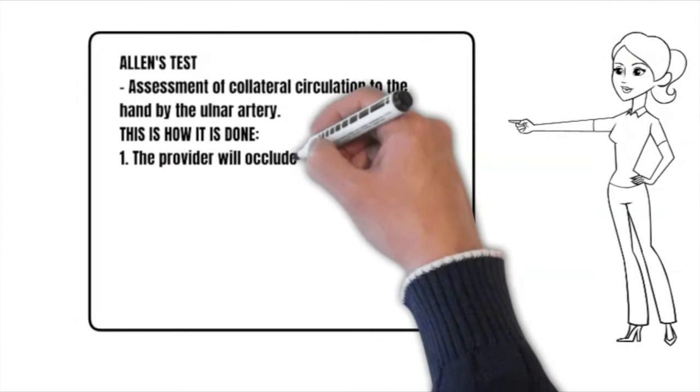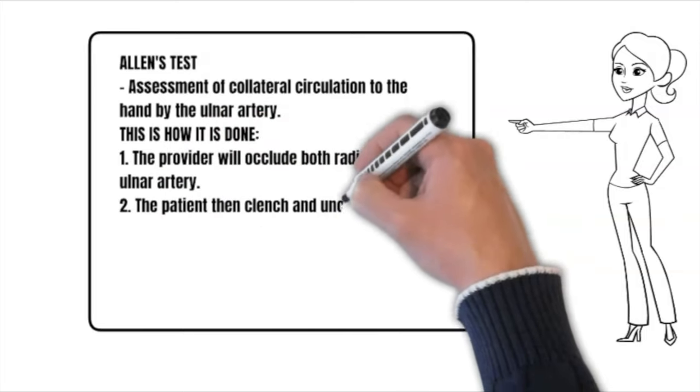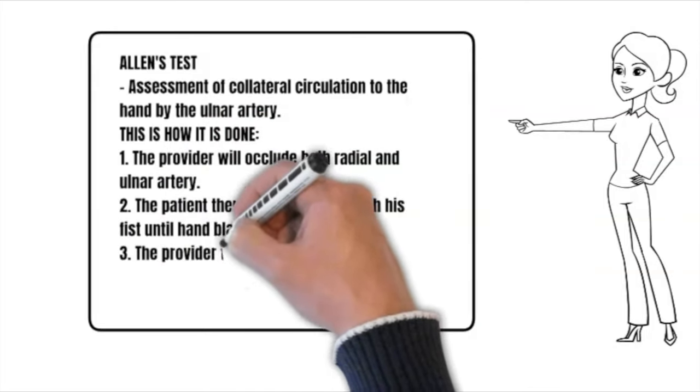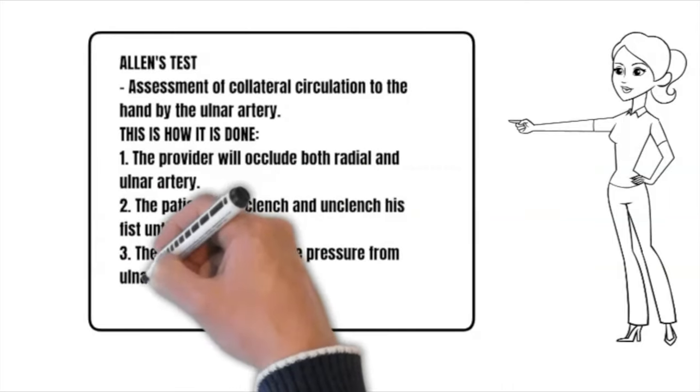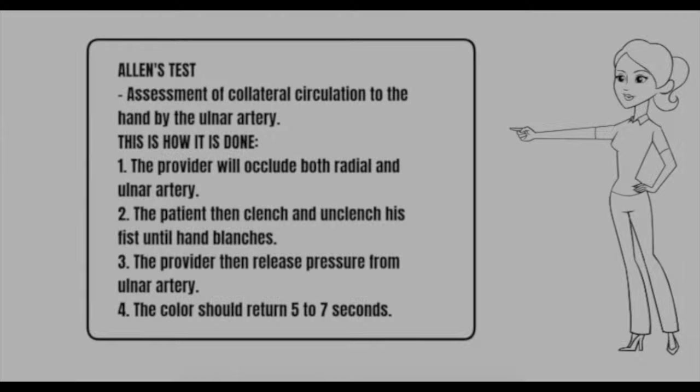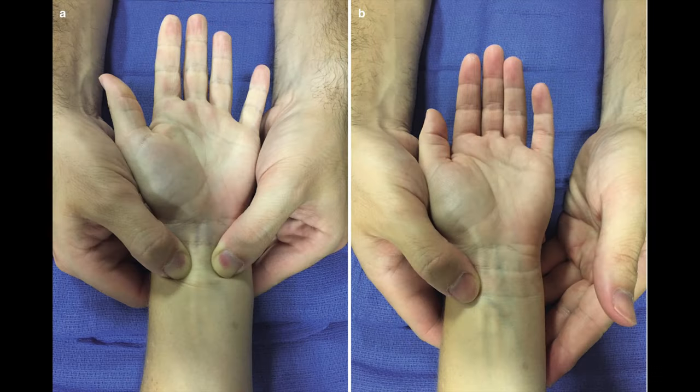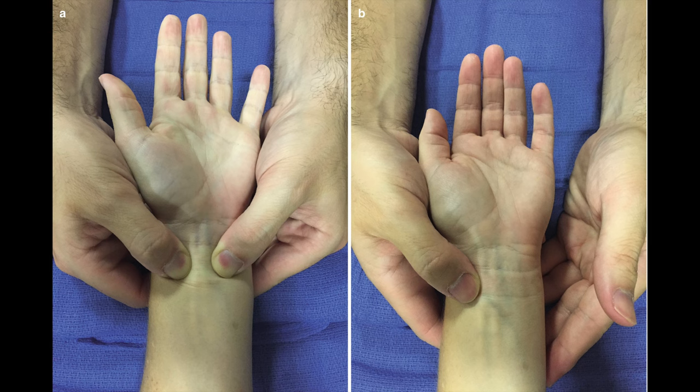This is how it is done: The provider will occlude both radial and ulnar artery. The patient then clenches and unclenches his fist until hand blanches. The provider then releases pressure from the ulnar artery. The color should return in 5 to 7 seconds. Allen's test should be done before inserting the arterial line.